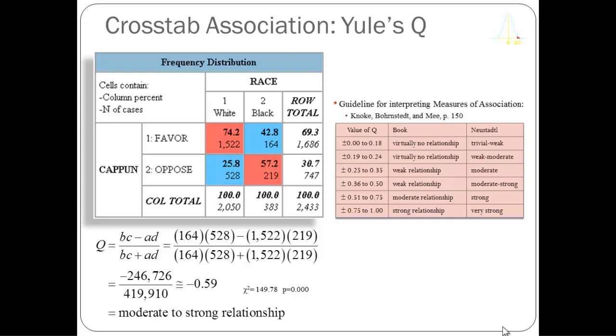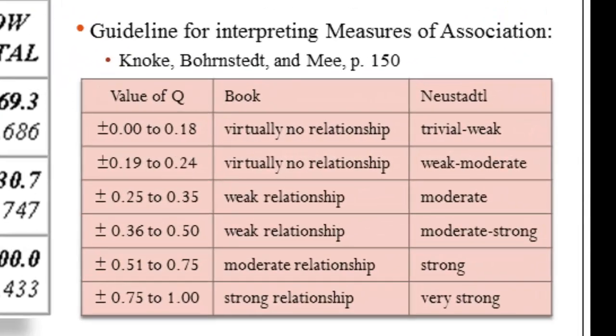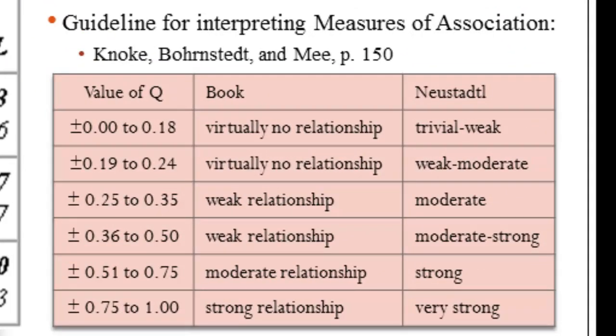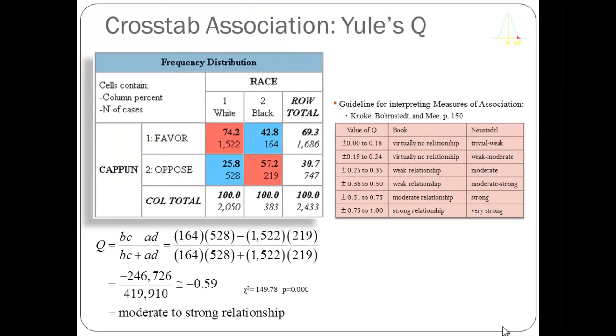The table on the right is a guideline to help you understand this measure — there's nothing magic in it. When I see a value like 0.59 I tend to think of this as a strong relationship, but the book on page 150 classifies it as moderate. They're less optimistic about the strength of the relationship than I am. Some of this is interpretive, and it takes years of using these statistics to gain comfort staking your own claim.